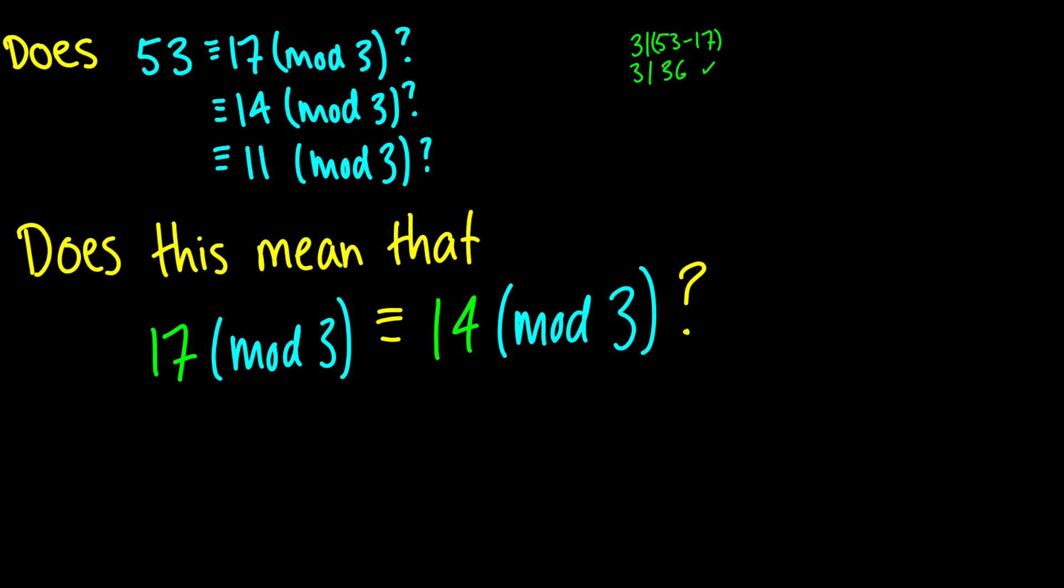Does 53 equal 14 mod 3? And if we do some arithmetic, we find out that yes, it does. What about 11 mod 3? So we keep going down. And we keep going down.